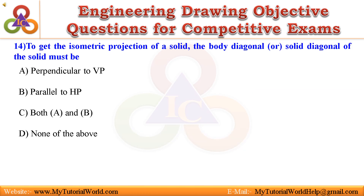14. To get the isometric projection of a solid, the body diagonal or solid diagonal of the solid must be: A. Perpendicular to VP. B. Parallel to HP. C. Both A and B. D. None of the above. Answer is: Both A and B.